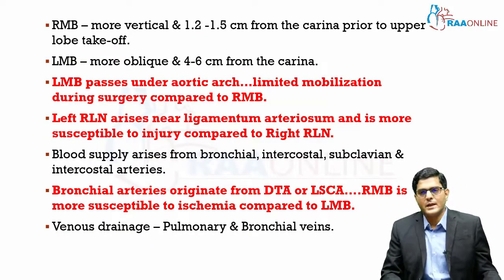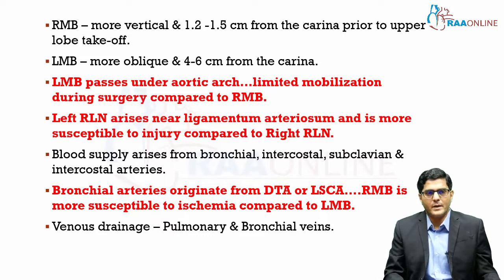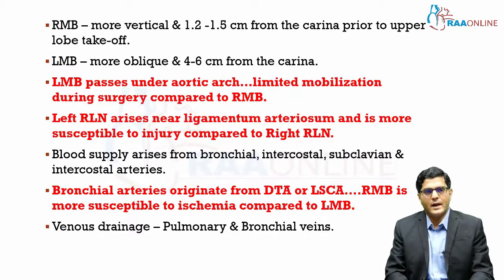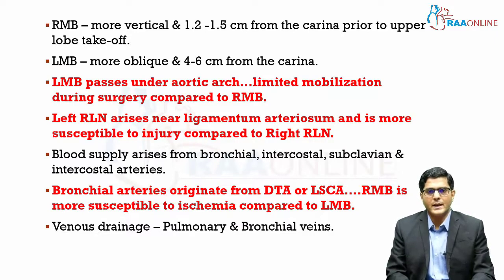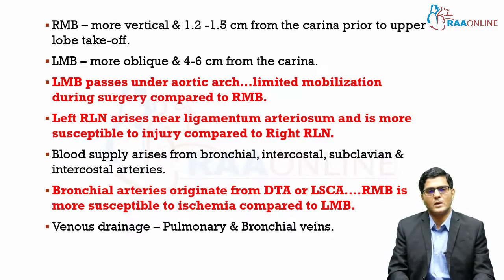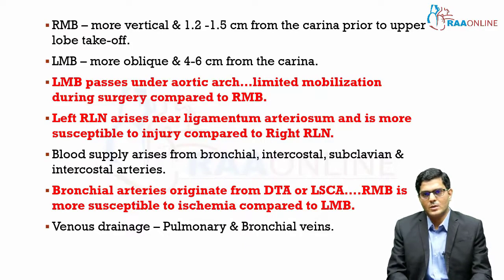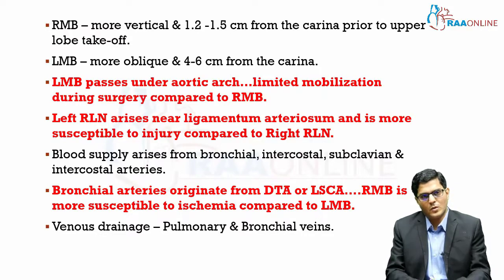Once the trachea ends at the carina it divides into the right and left main bronchi. The right main bronchus is more vertical and extends 1.2 to 1.5 centimetres from the carina prior to the upper lobe takeoff. The left main bronchus is more oblique and extends four to six centimetres from the carina. Because the right main bronchus is wider, shorter, and more vertical, anything aspirated preferentially enters it rather than the left.